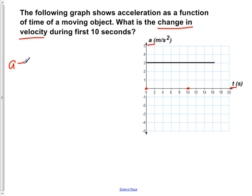You remember that acceleration is equal to the change in velocity over the change in time. If we now solve this equation for the change in velocity, we would see that delta v is equal to a times delta t.